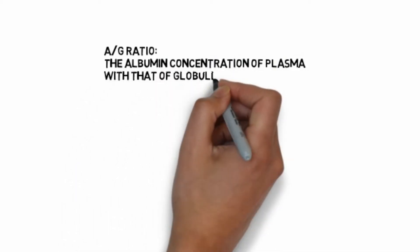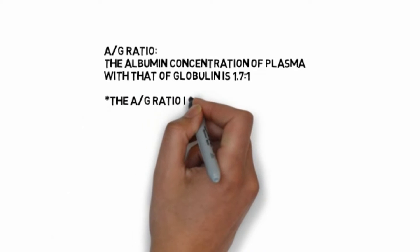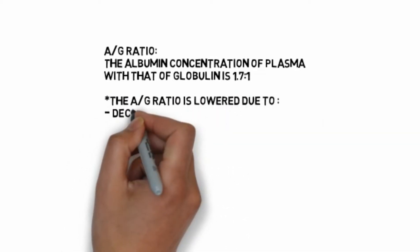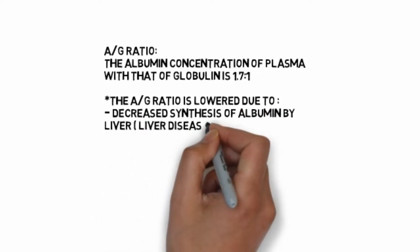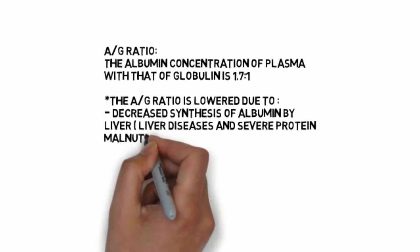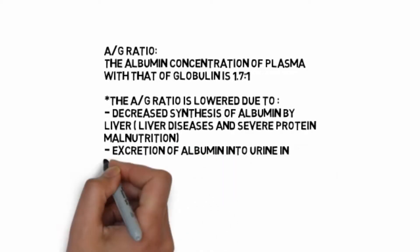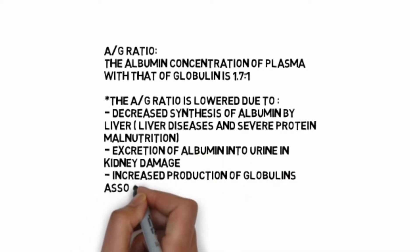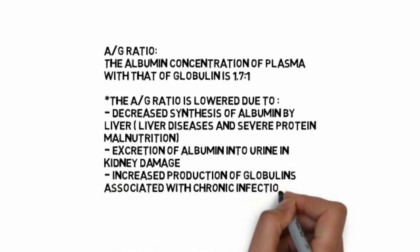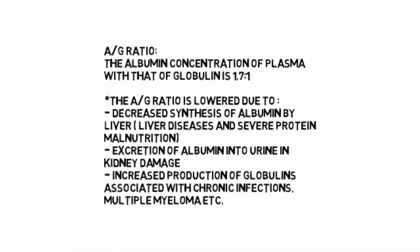Albumin-globulin ratio is the albumin concentration of plasma compared to globulin, normally 1.7 to 1. The ratio is lower due to decreased synthesis of albumin by liver in liver disease and severe protein malnutrition, excretion of albumin into urine in kidney damage, or increased production of globulins associated with chronic infections and multiple myeloma.